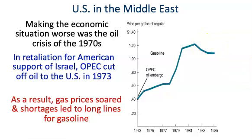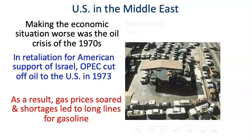Now, I know what you're thinking — $0.40 and $1.20, that's not bad. But if you adjust for inflation, $0.40 in 2019 is $2.31 a gallon, which is pretty comparable to what we pay now. And $1.20 is almost $7 a gallon in 2019 — a whole lot of money for a gallon of gasoline. Plus, there were huge lines; it would take hours to get gas.